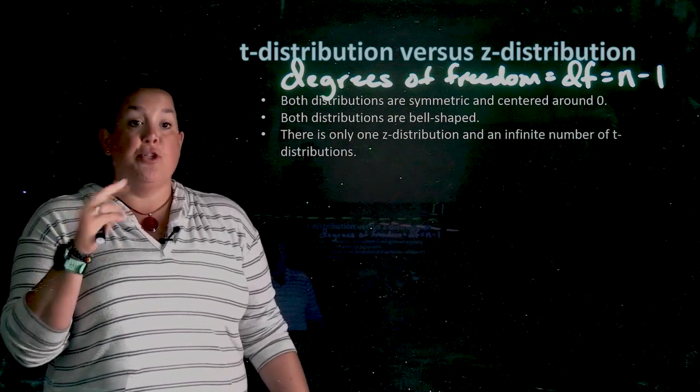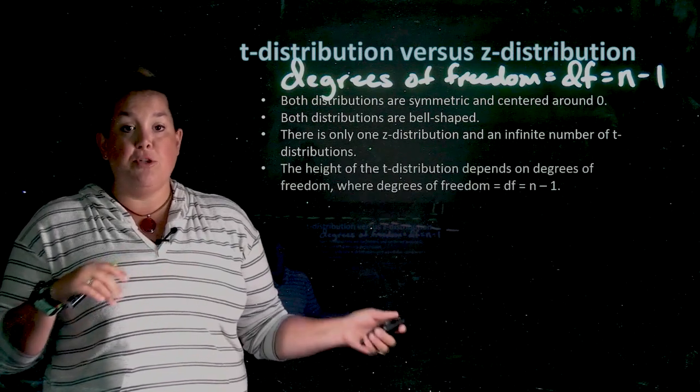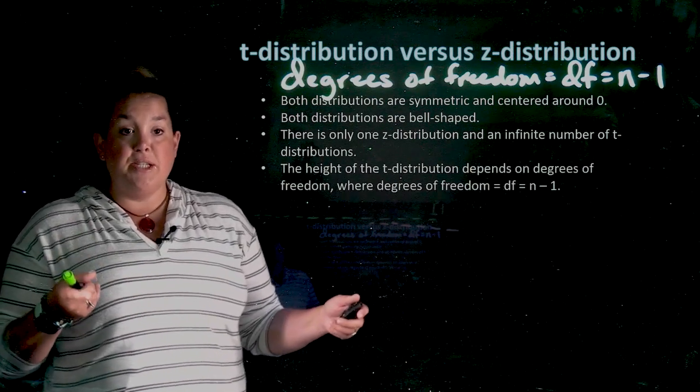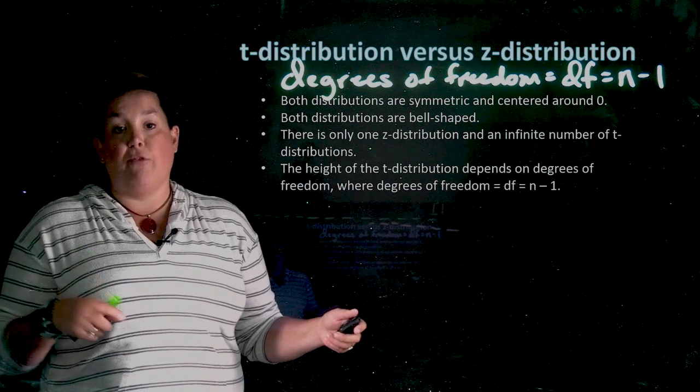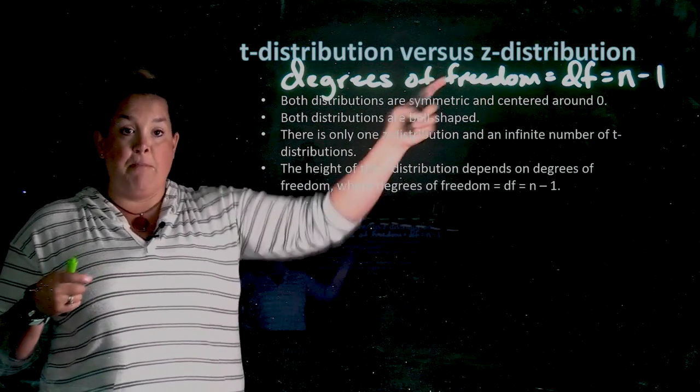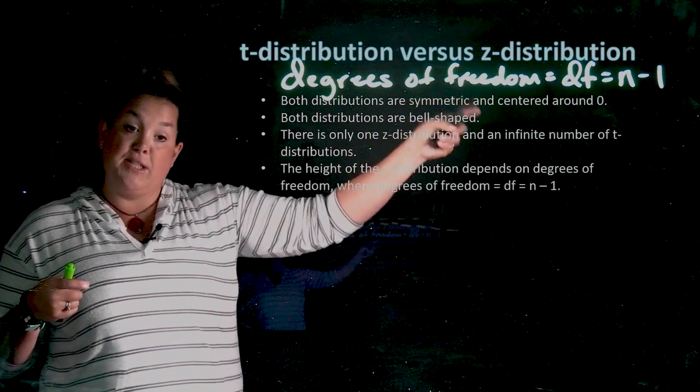However, there's only one z-distribution and an infinite number of t-distributions. The height of the t-distribution depends on degrees of freedom, where degrees of freedom, remember, is measuring n, or the sample size, minus one.